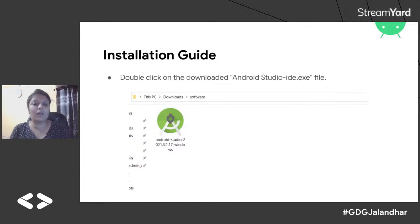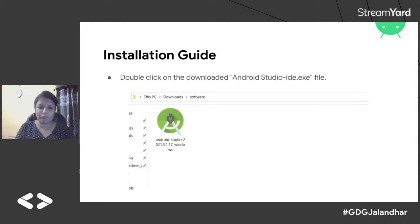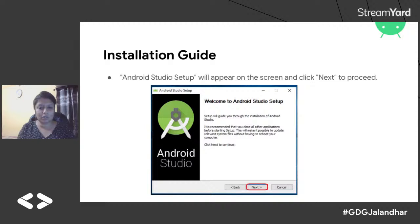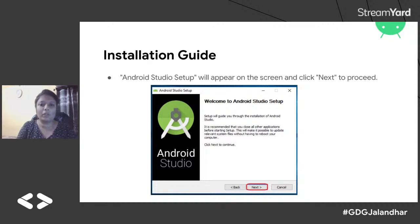Once you have the .exe file, double-click it. There will be a series of screens — it's a typical installation, just click Next through four or five steps, then click Finish. You don't need to do anything extra. Your Android Studio installation will be complete.